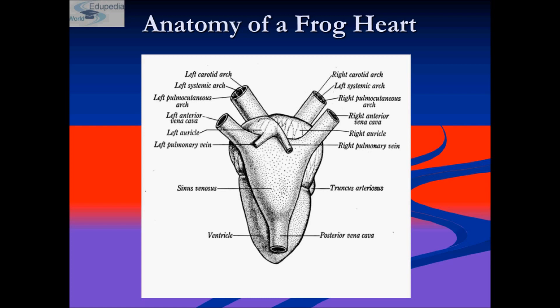The heart is a muscular structure situated in the upper part of the body cavity. It has three chambers — two auricles and one ventricle — and is covered by a membrane called the pericardium.